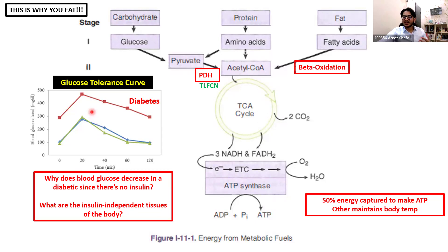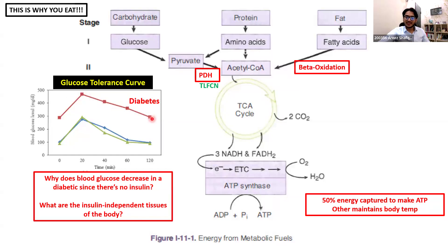In diabetes, it's very easy to understand what happens because you don't have the insulin effect — either because it's not there in type 1 diabetes, or your cells aren't responding to insulin properly in type 2 diabetes. In any case, you will have hyperglycemia because there's no insulin effect. So when the person eats a meal, his blood glucose stays high, and you have chronic or long-term hyperglycemia.